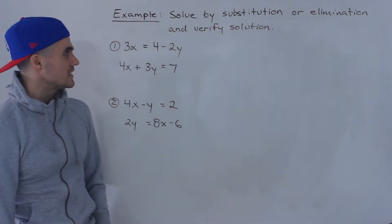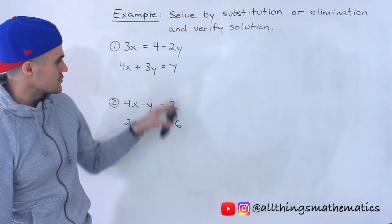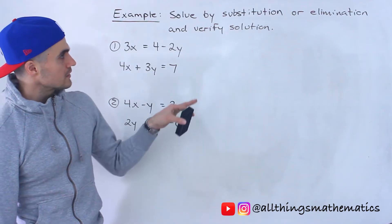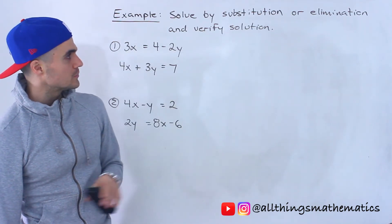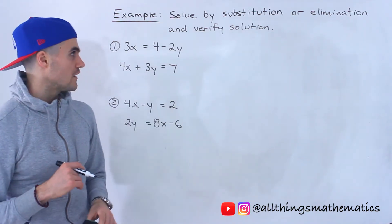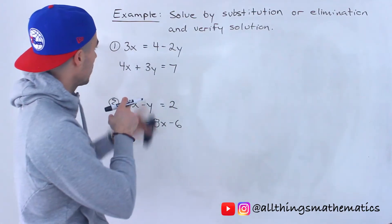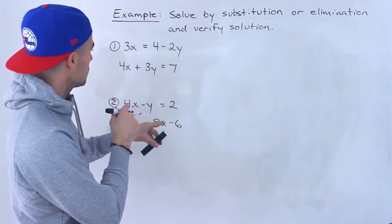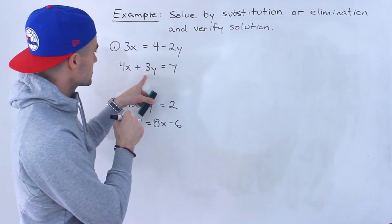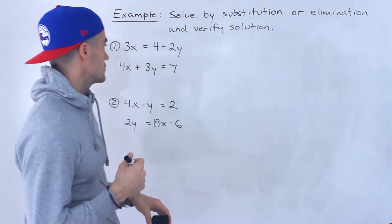Welcome back guys, moving on to the next question. We got these two linear systems here and we've got to solve by substitution or elimination and then verify the solution. Starting with number one we got 3x equals 4 minus 2y and then we got 4x plus 3y is equal to 7.